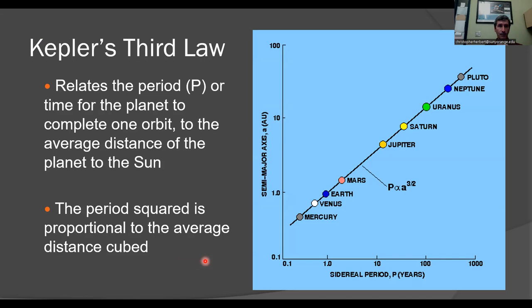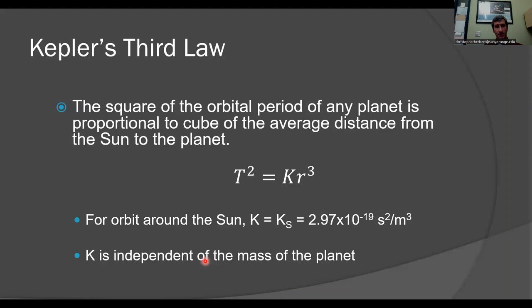The time it takes to go around the sun squared is proportional to the radius of the orbit or, more precisely, the semi-major axis. So T squared is proportional to some constant times R cubed, where K is a constant related to whatever body's being orbited.